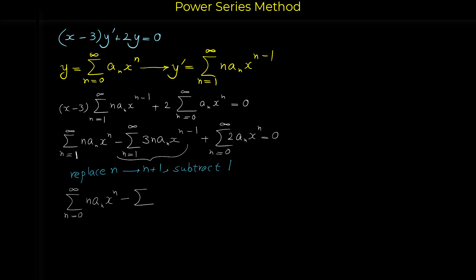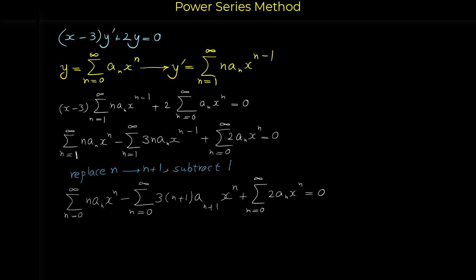In the middle power series, replacing every n with n plus 1 gives 3 times (n plus 1) a_{n+1} x to the power of (n plus 1 minus 1), which is x to the n, with n starting from 0 to infinity. Now, in all three power series we have x to the n with n starting from 0, so everything is ready to combine into a single sigma factoring x to the n.